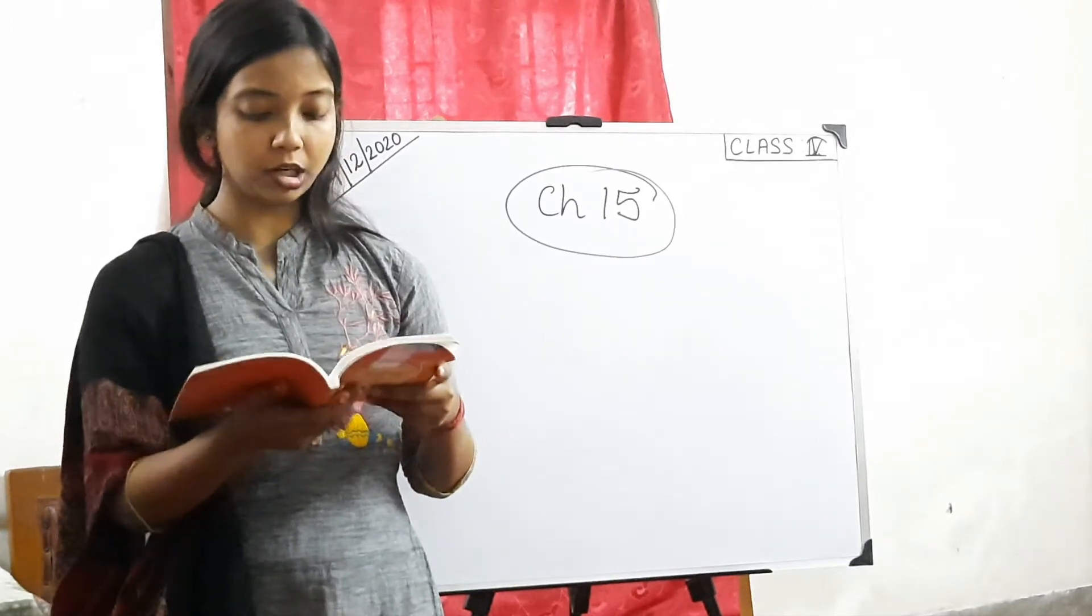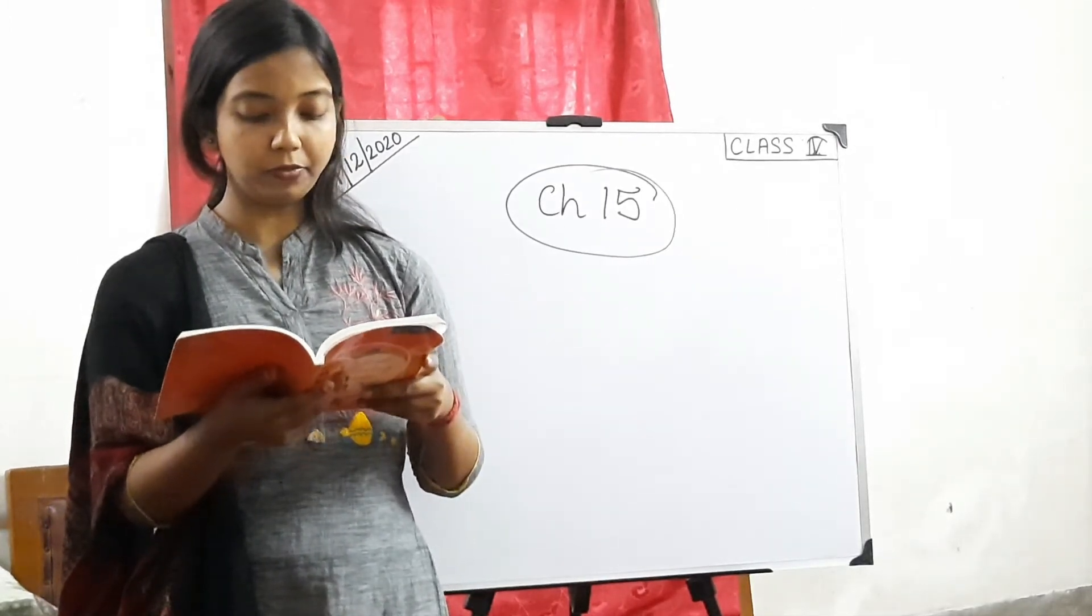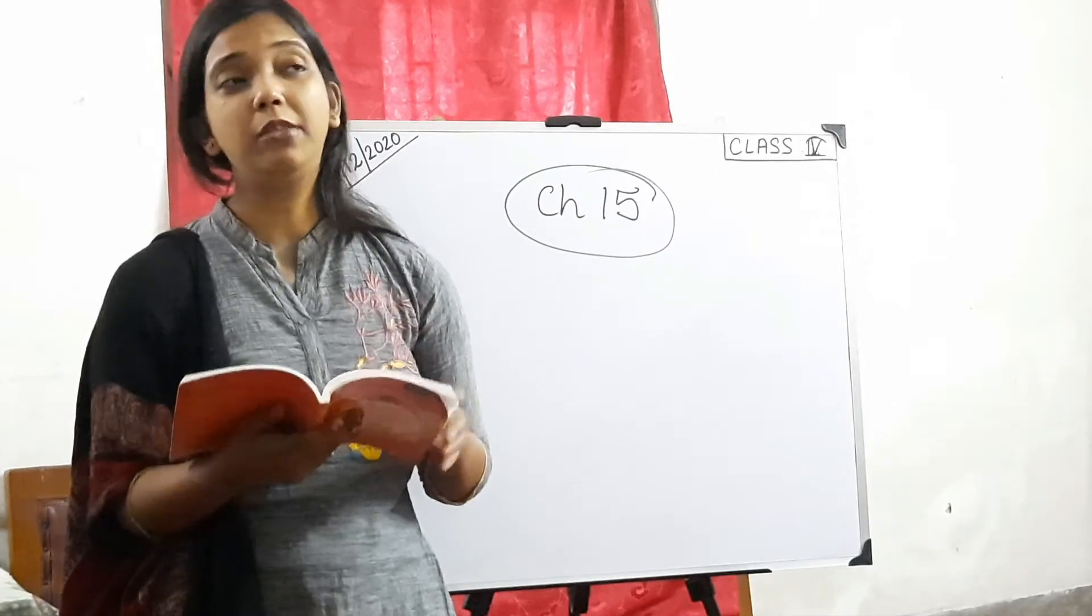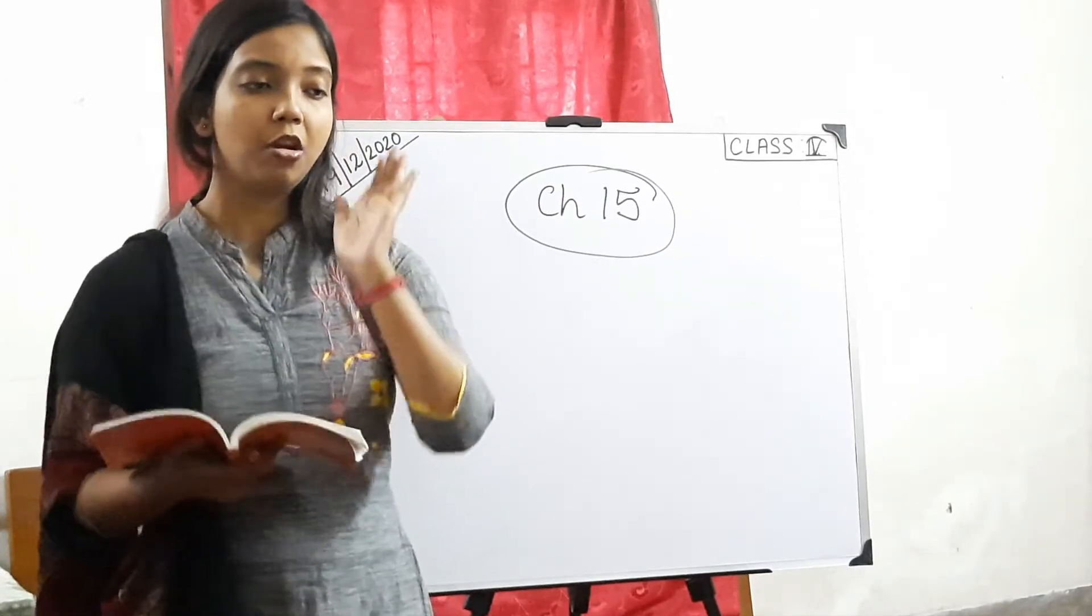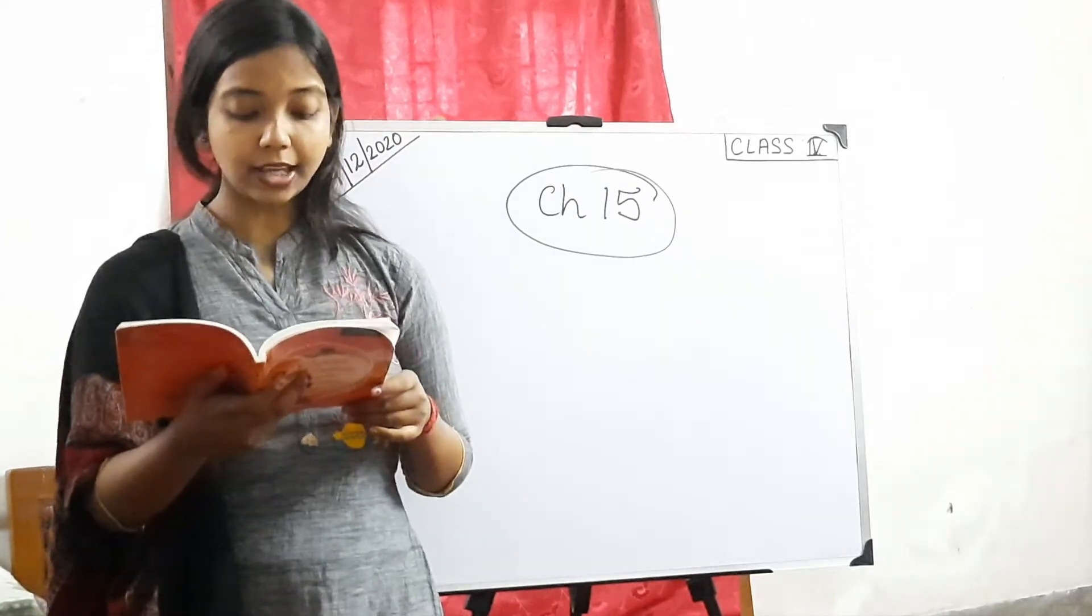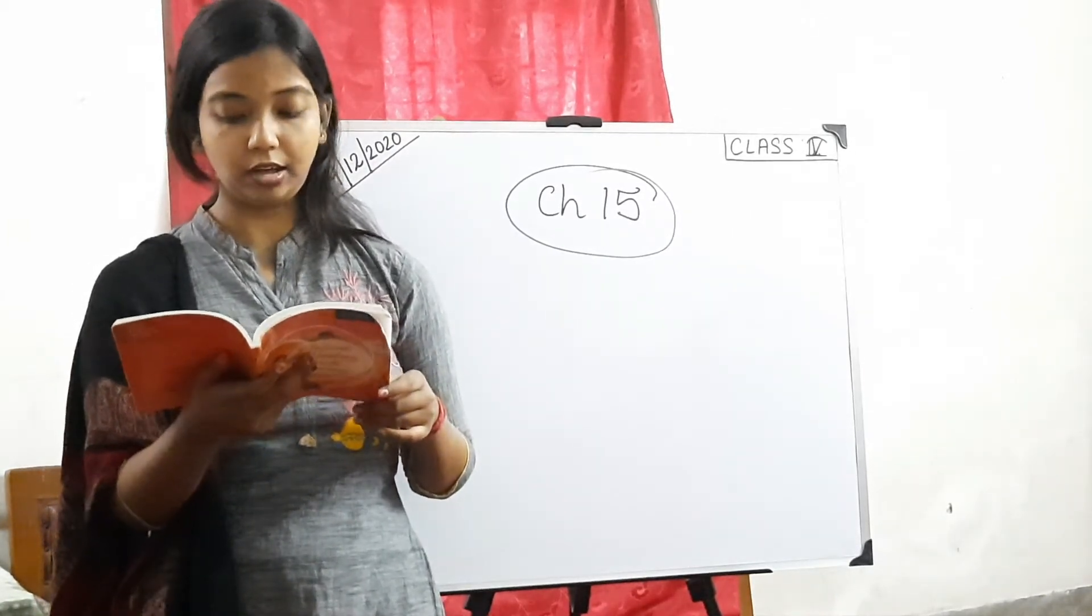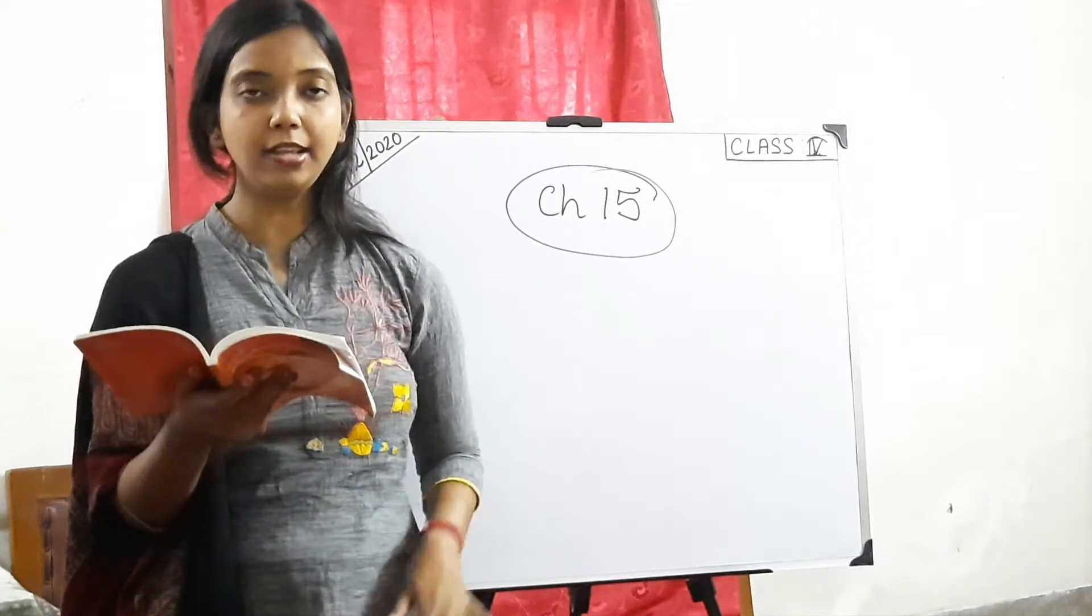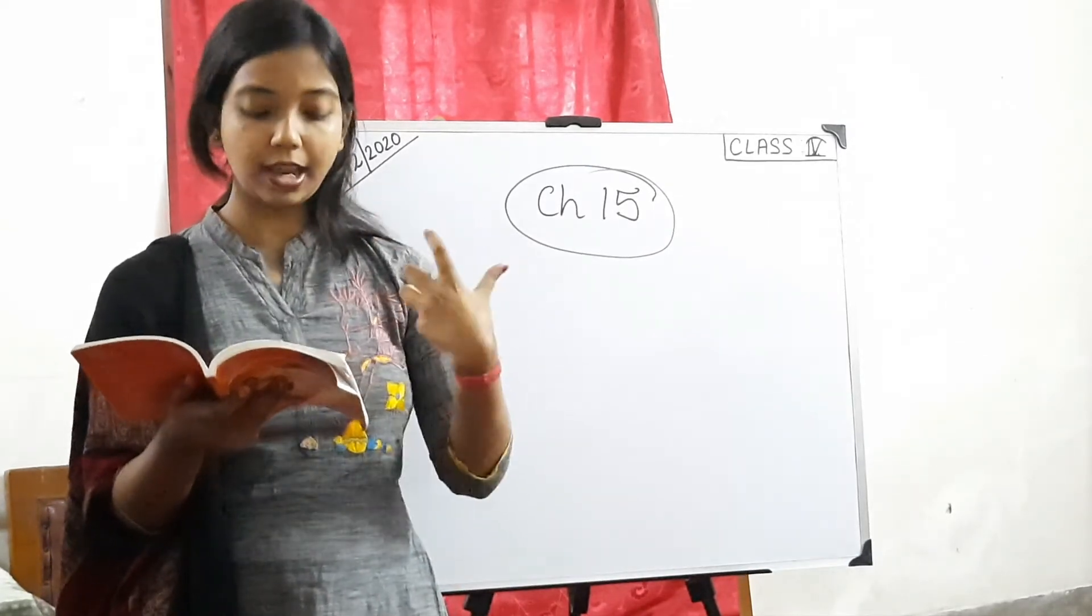But when the smoke cleared away there sitting in the middle of the floor was a monster. When the smoke was clear they saw on the middle of the floor a monster was sitting. It had eight legs and carried a violin tucked under its chin.